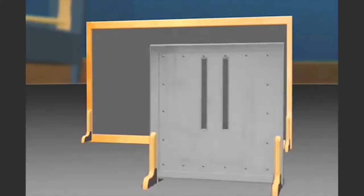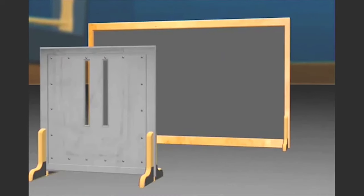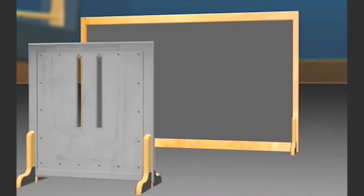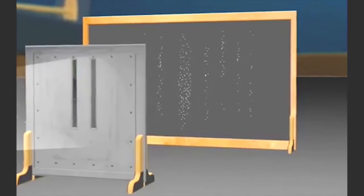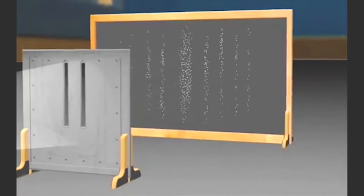In this experiment, consider a partition with two slits cut in it, and on the far side of the partition we place a screen. We then pass a beam of light made of small photon particles through the slits to see what pattern appears at the back.